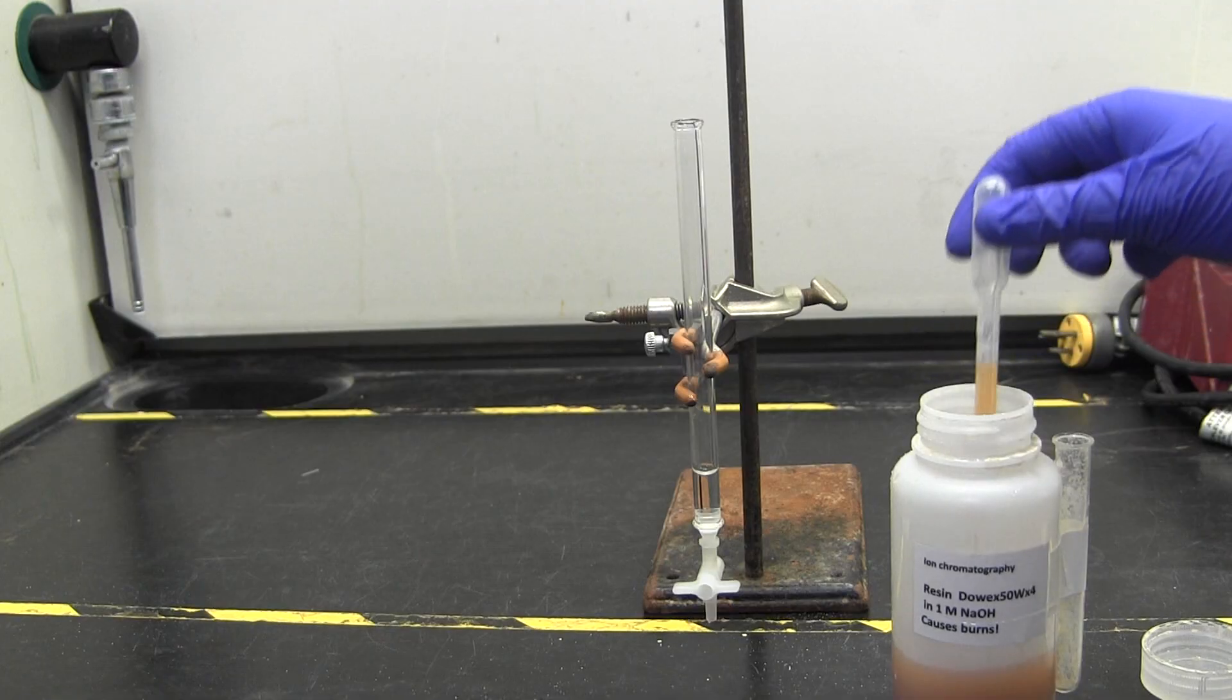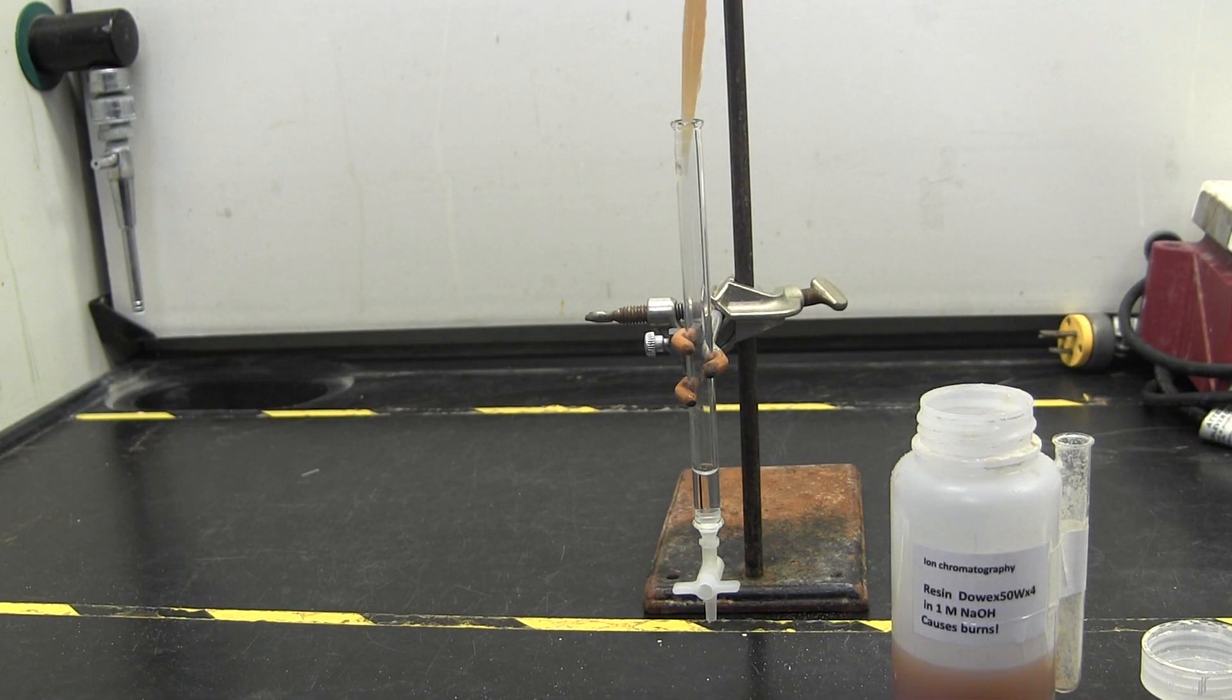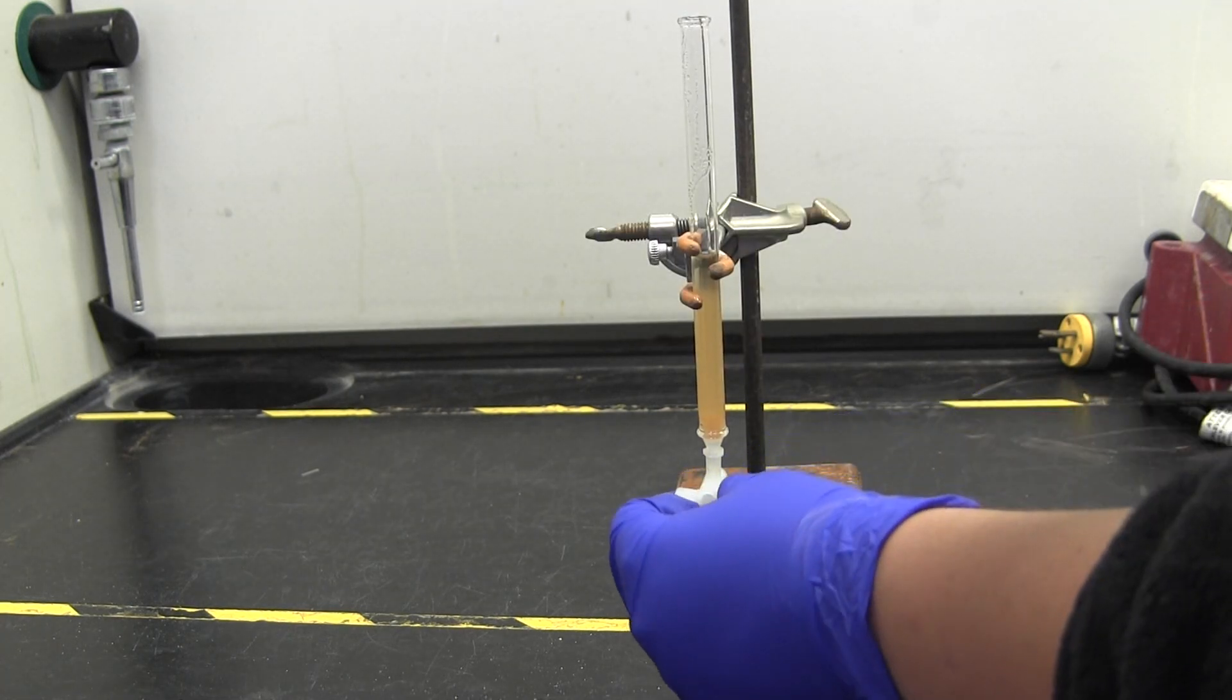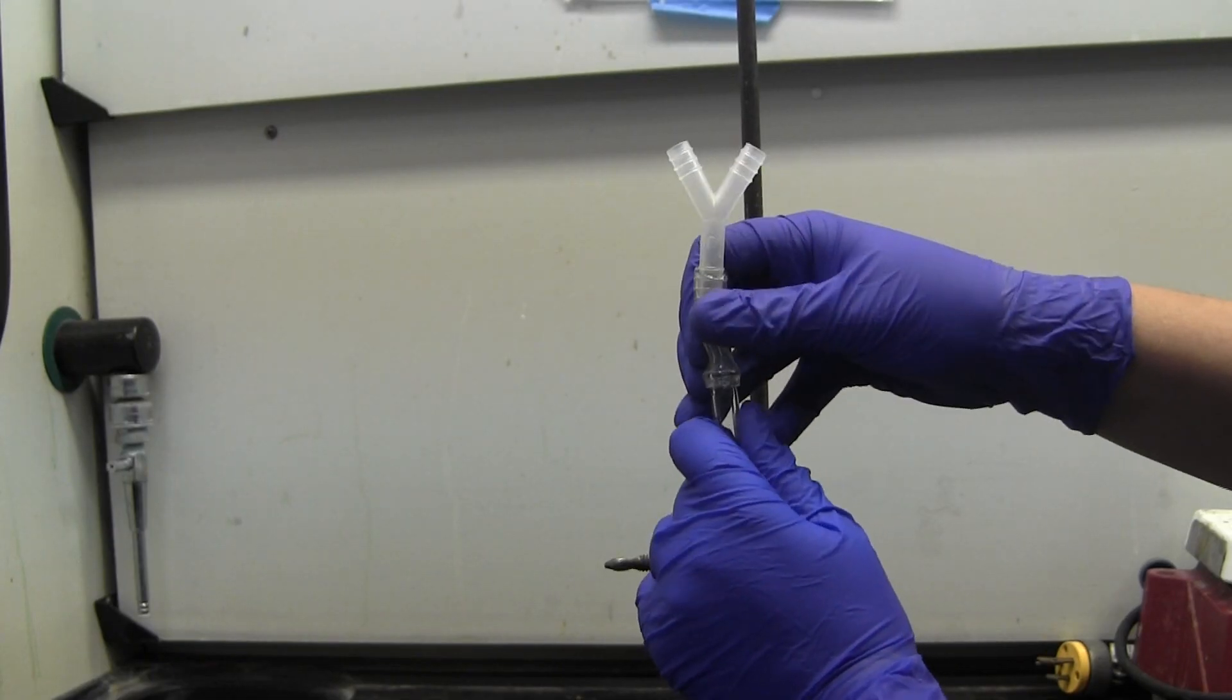Then, pipette some of the solution into the column. While making sure that the solution does not settle, continue loading your column until you have 2 to 3 centimeters of resin. Then allow the water to drain to settle the resin. This is also called packing the resin.